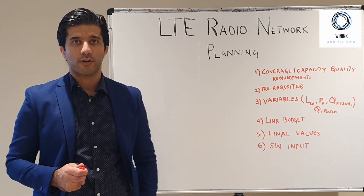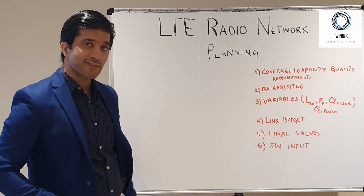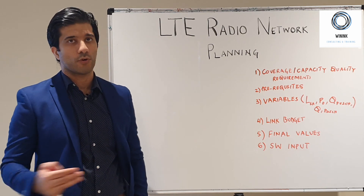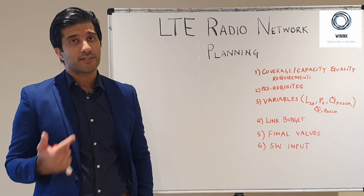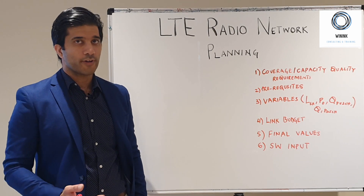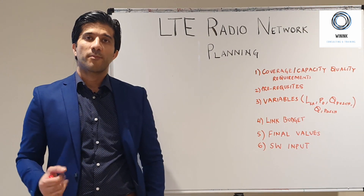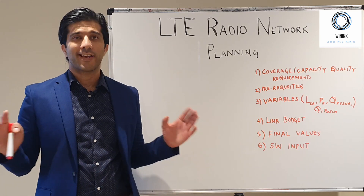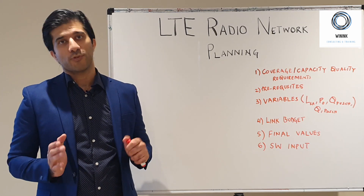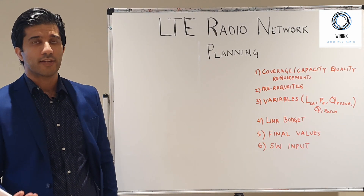The topics included in LTE radio network design are as follows. The first step is defining your quality requirements in terms of coverage and capacity. The second step is your prerequisites — your network constants. The third step is your variables: the cell range you're trying to achieve, the power control parameters you're going to set, and the load conditions of the network. The fourth step is the link budget, which is how you calculate the losses and gains from the transmitter point to the receiver point — one of the most important steps.